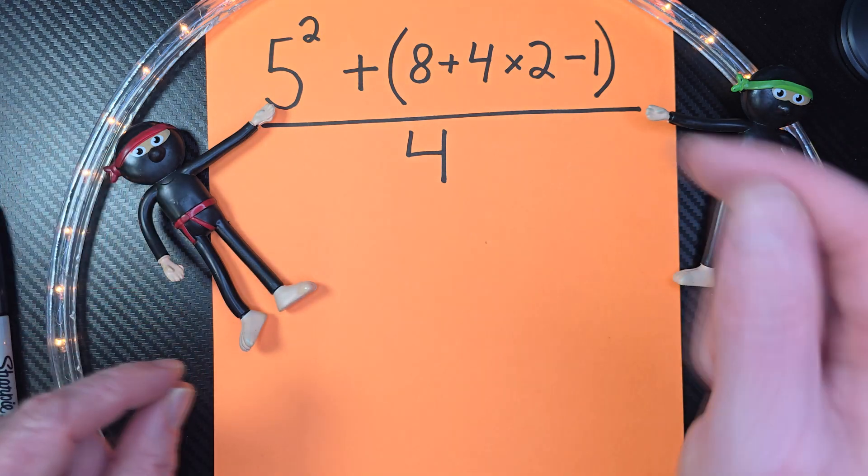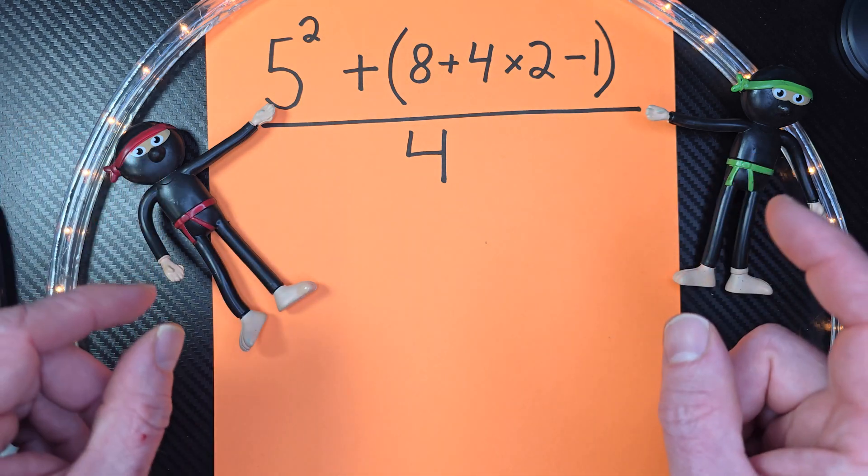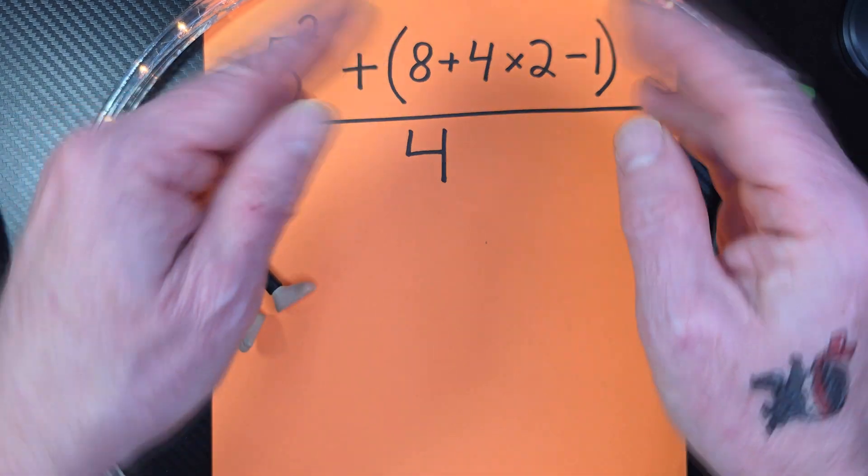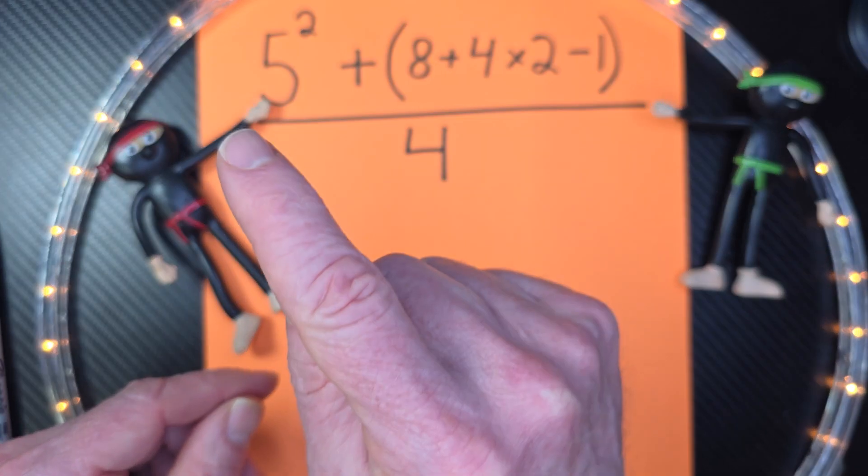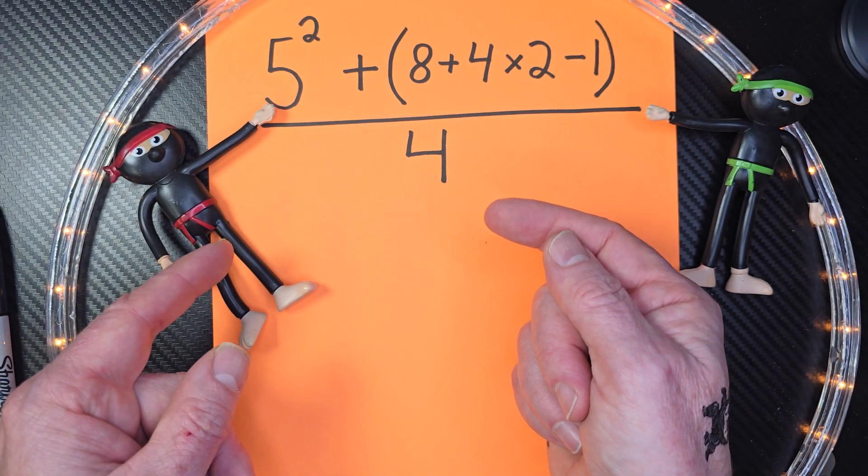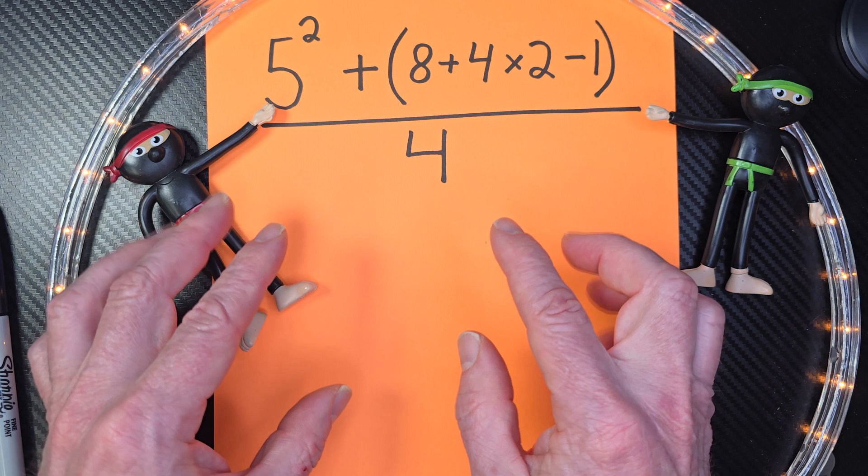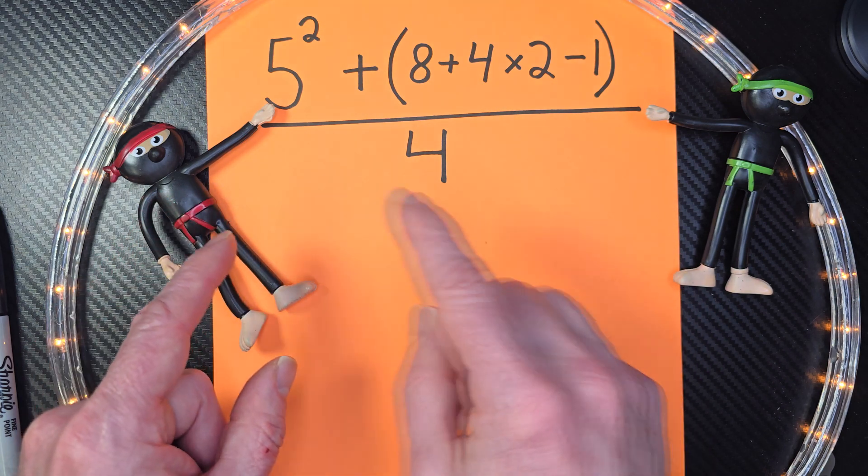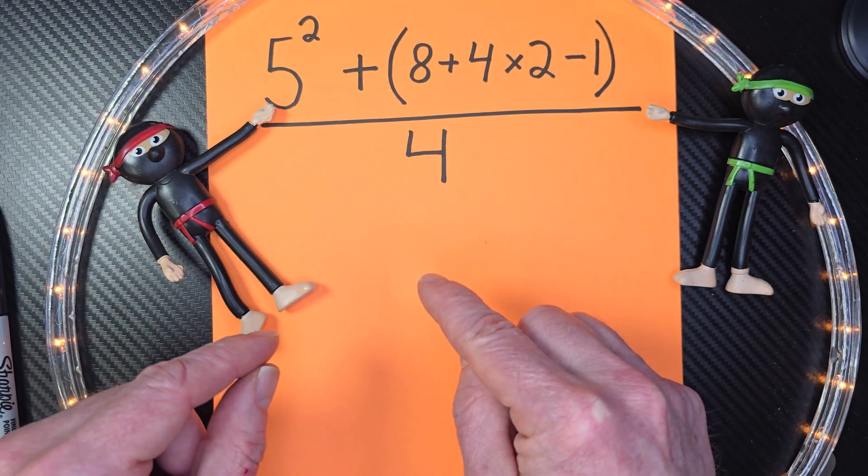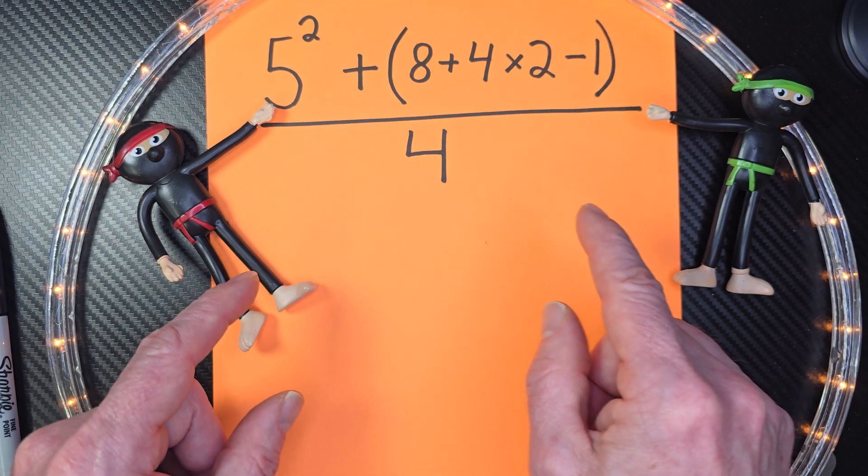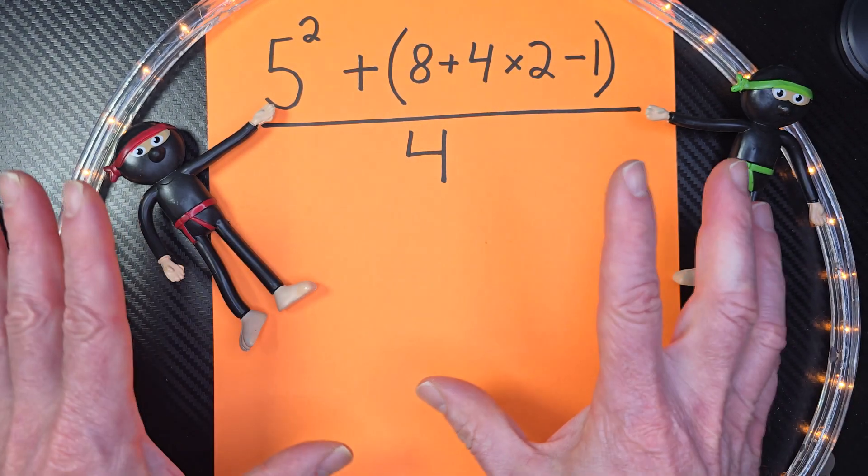First of all, what do we do? What is our step one? That's right, we do what is inside parentheses. Our next step, we'll be doing the exponents. Then we're going to be doing, if there is any multiplication division, we'll do that from left to right, and at the very end, we do addition and subtraction from left to right. All right, let's begin.